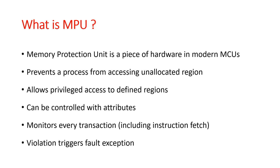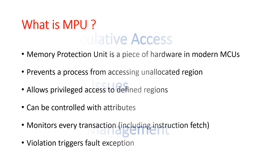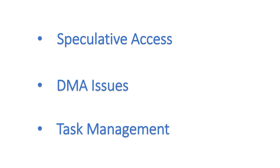We can control the MPU with the attributes provided in the Cortex-M7, such as shareability, cacheability, etc. We will cover them in upcoming videos. There are three main reasons to use the MPU: preventing speculative access to certain memory locations, DMA limitations, and better management of RTOS tasks.